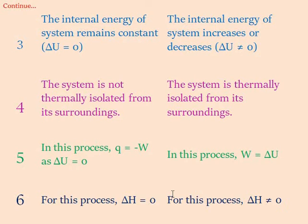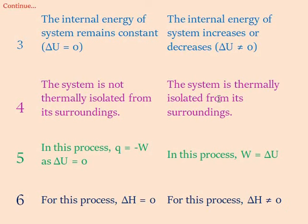Third point: in an isothermal process the internal energy of the system remains constant, that is delta U equals zero, since delta T equals zero. In an adiabatic process the internal energy of the system increases or decreases, therefore delta U is not equal to zero and delta T is not equal to zero. Fourth point: the system is not thermally isolated from its surroundings in an isothermal process, but is thermally isolated in an adiabatic process.